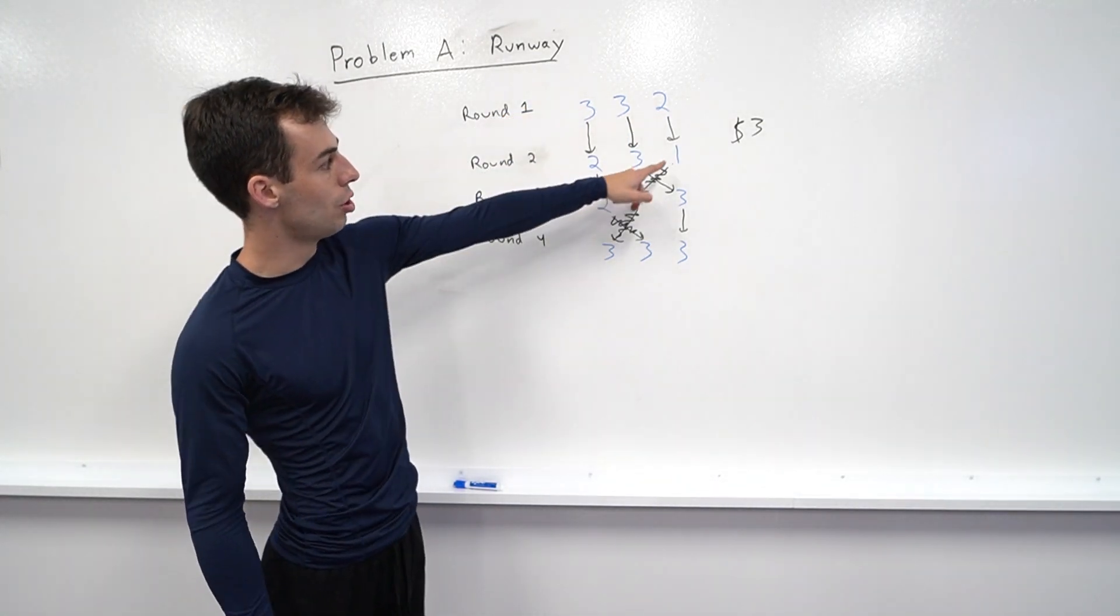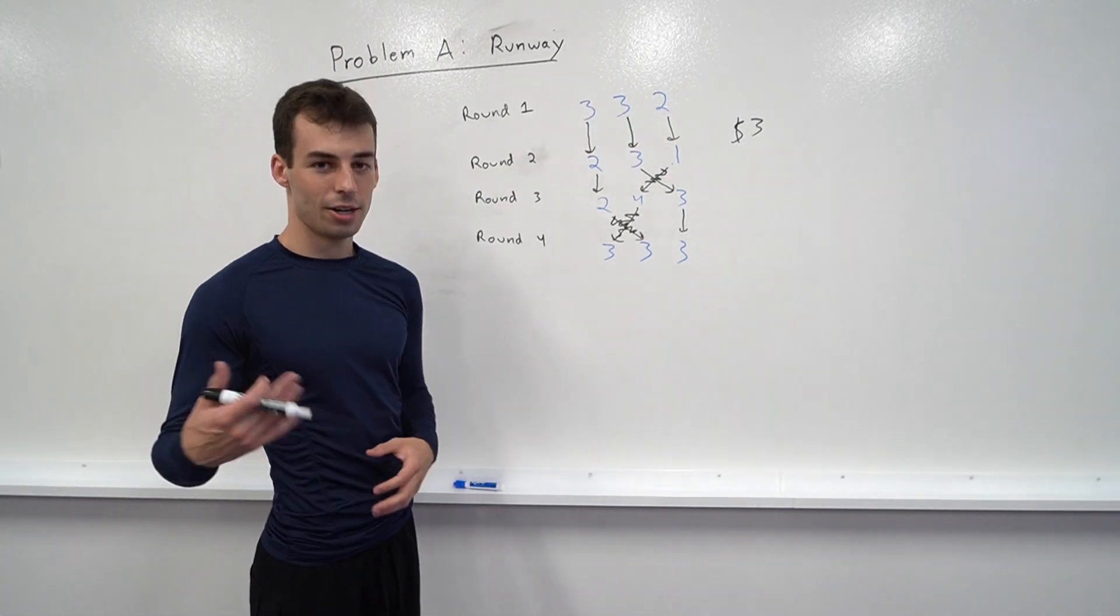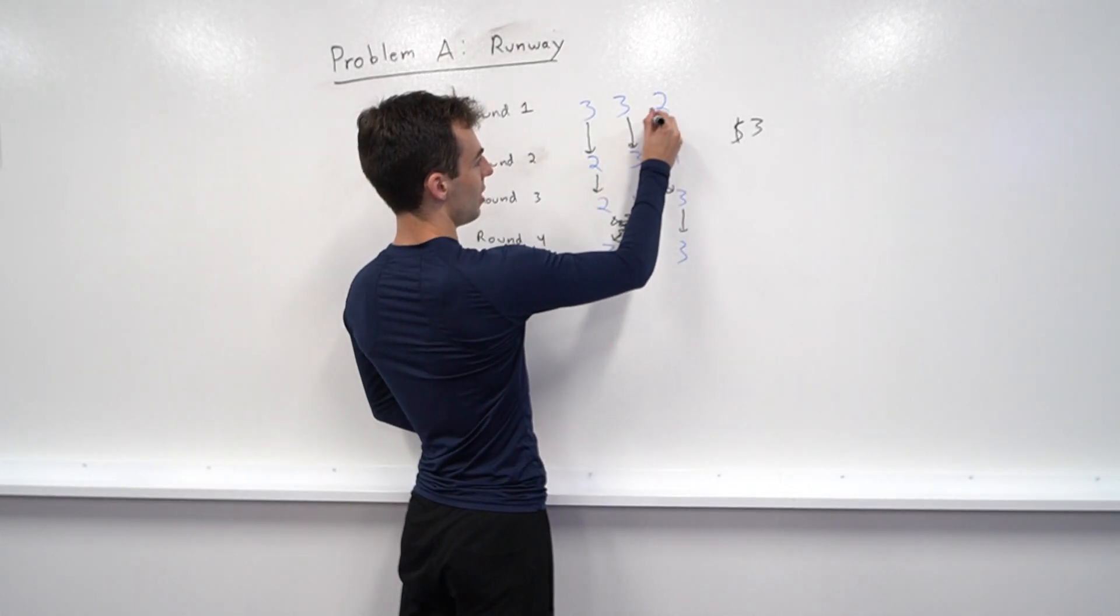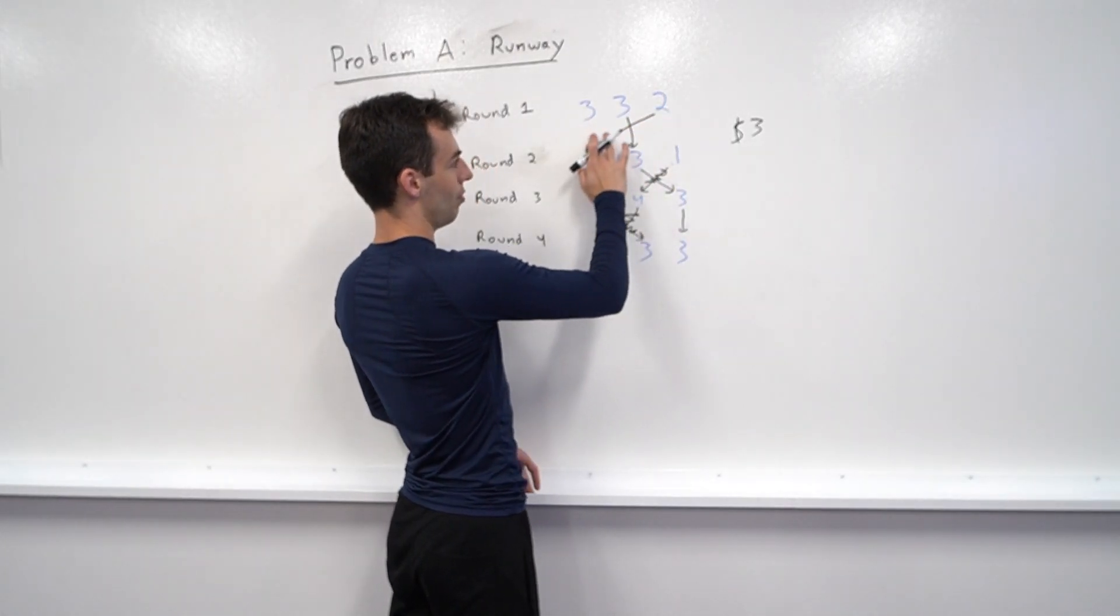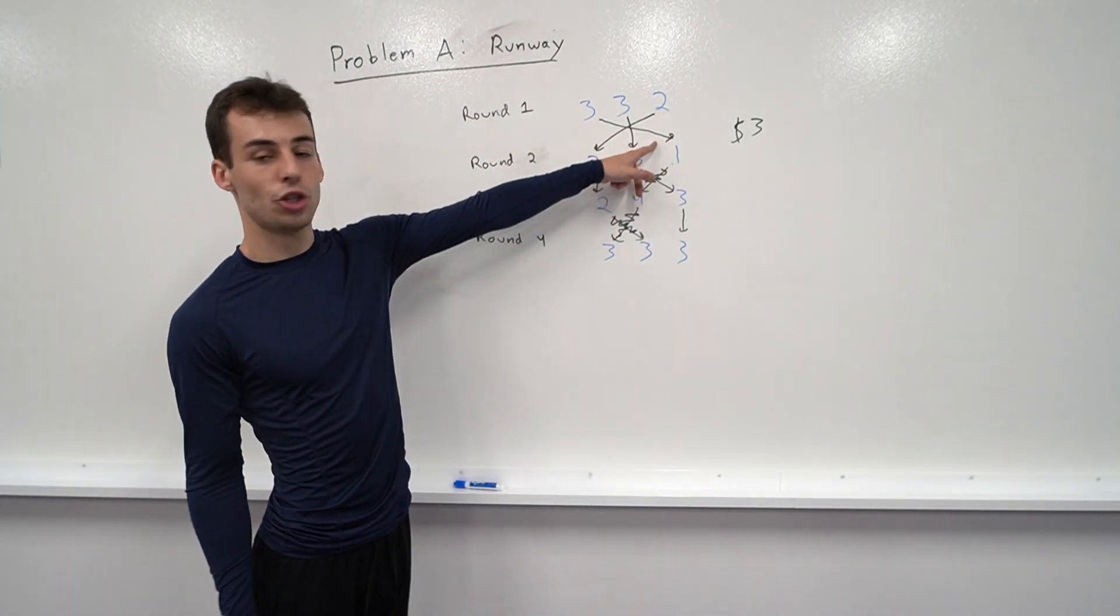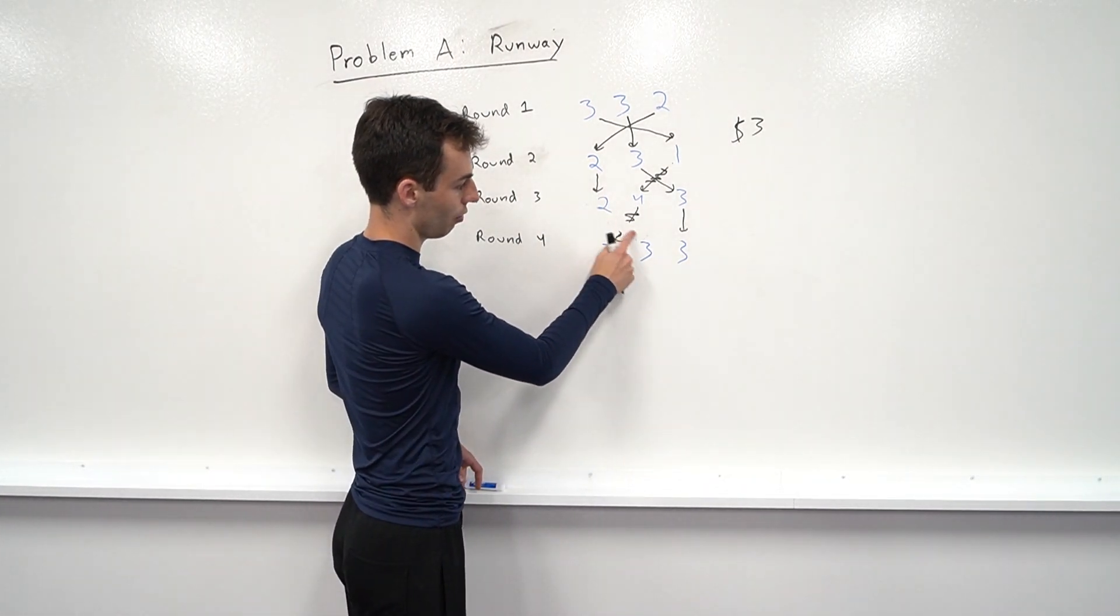But we can make this model switch to the one and this model save her free quick change for later on. So we can have this two stay going to a two and we can have the three switch to a one. Now the three still has to use the quick change here but this two now has the quick change for later on which means we get this one for free.